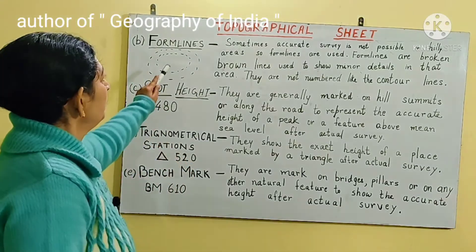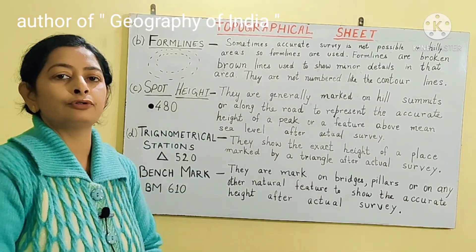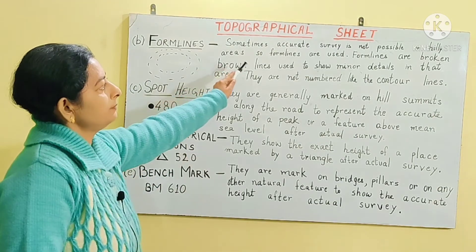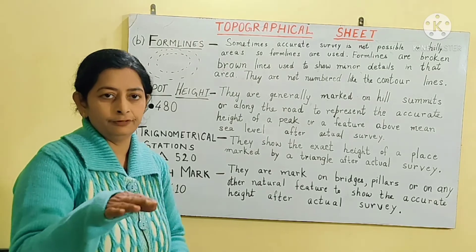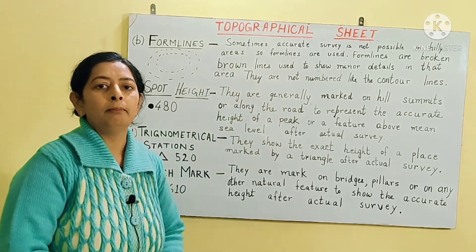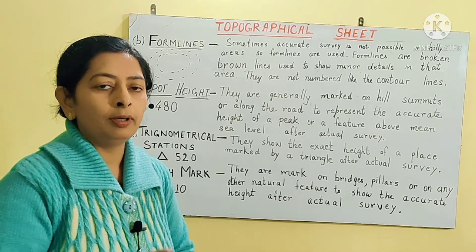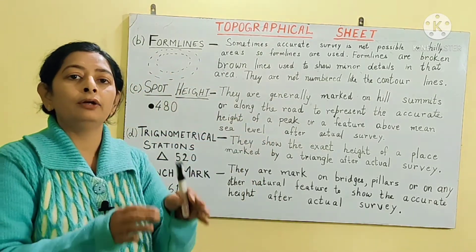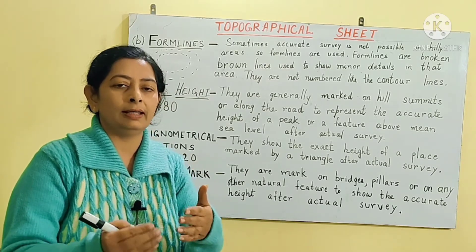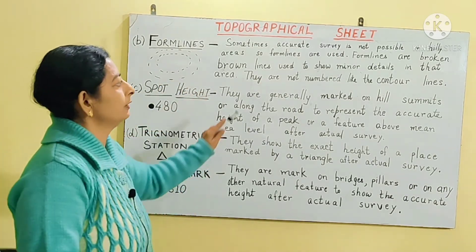The next method of showing relief is form lines. Form lines are broken lines — not continuous — generally shown in brown color on the map. They are not numbered like contour lines. Accurate survey is not always possible in hilly areas due to rough terrain, so form lines are used to show minor details. They represent approximate heights and are not accurate measurements like contour lines.